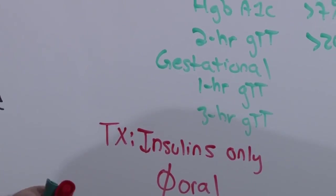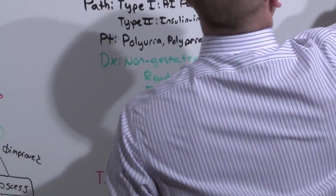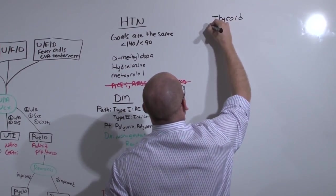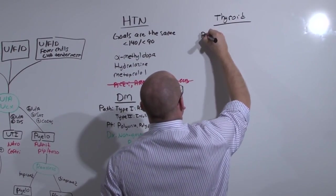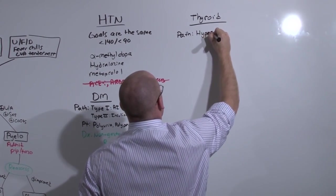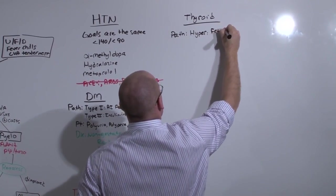We're going to move on to start talking about thyroid disease. And the problem with thyroid disease is that too much is bad and too little is bad. If you are hyperthyroid, you can burn up baby. Baby will die.